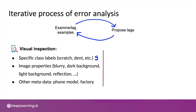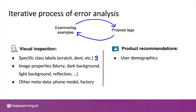Let me step through one more example: product recommendations for an online e-commerce site. You might look at what products a system is recommending to users and find clearly incorrect or irrelevant recommendations. Try to figure out if there are specific user demographics — are we really bad at recommending products to younger women, or to older men? Or are there specific product features or categories where recommendations are particularly poor? By iteratively brainstorming and applying such tags, you can come up with ideas for categories of data worth improving your algorithm's performance on.